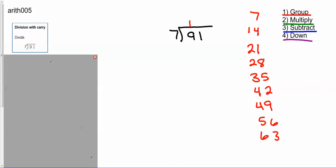So when I multiply, I do one times seven, which gives me seven. Then I'm going to subtract. Nine minus seven is two.